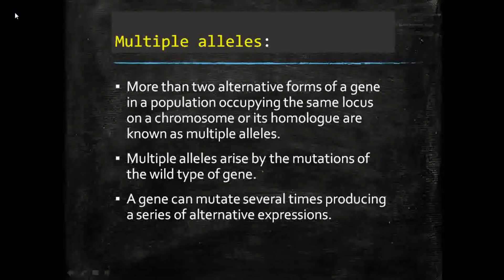When we call regular alleles, there are two alternative forms of genes. But with multiple alleles, more than two alternative forms are found in the population, and they occupy the same locus on a chromosome or its homologue. These are known as multiple alleles.